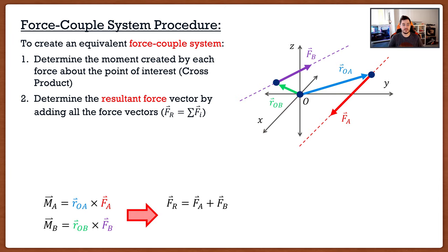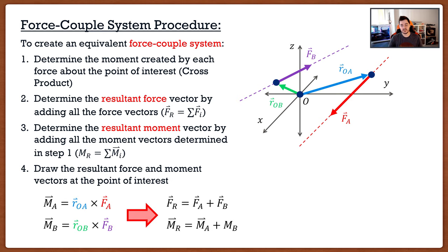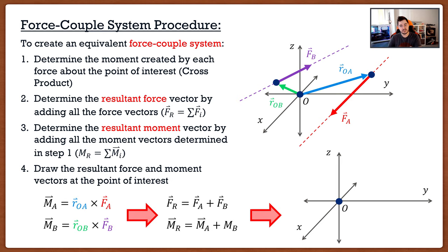From there we move to a simpler step: finding the resultant force. If I have F_A and F_B in Cartesian vector notation, all I need to do is add the components together. Next, determine the resultant moment. If I have M_A and M_B in Cartesian vector notation — which you should, since cross product returns a vector in Cartesian vector notation — all I do is add the components together. Finally, most professors want you to draw what happened: we went from two forces acting at different points to a resultant force and resultant moment both acting at point O.